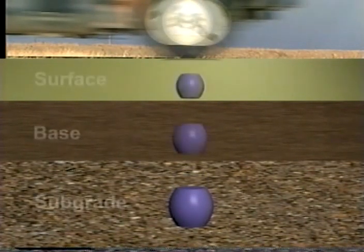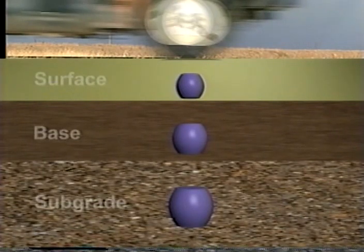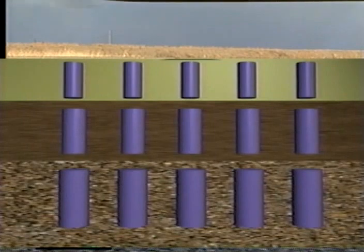Before we get into the details of the startup process, it's important to explain what resilient modulus is. What you're watching now is part of that explanation. It's an animation, but it does suggest what really happens when heavy vehicles use a pavement. Each axle briefly loads all of the materials under it. Then, as the vehicle moves, loading is transferred to other areas.